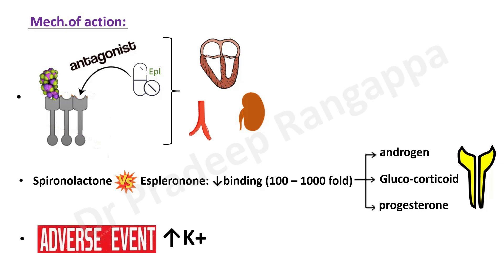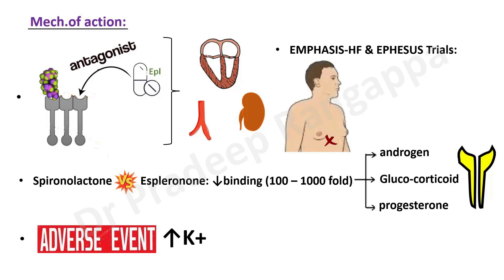The occurrence of gynecomastia was non-existent in studies with eplerenone. As with spironolactone, one of the adverse events is hyperkalemia since it is a potassium-sparing diuretic. There are three basic trials — RALES, EMPHASIS, and EPHESUS — all published in NEJM. The EMPHASIS heart failure study and the EPHESUS trial showed that gynecomastia did not occur in patients who took eplerenone, which is a distinct advantage.